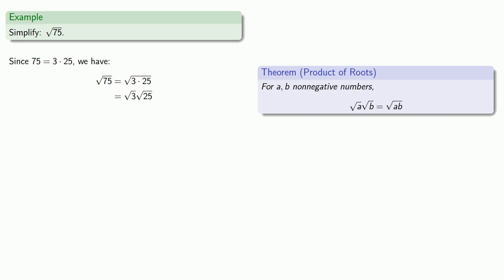Again, since we are genetically programmed from birth with the knowledge that square root of 25 is the same as 5, we can replace it, and typically we write things so that the radical comes second. So we'll rewrite this as 5 square roots of 3.